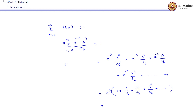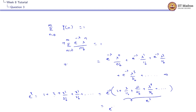This series inside the brackets is nothing but the expansion of e^λ. We know the Taylor expansion of e^x is 1 + x + x²/2! + x³/3! + and so on. Here, x is replaced by λ, so the series equals e^λ.